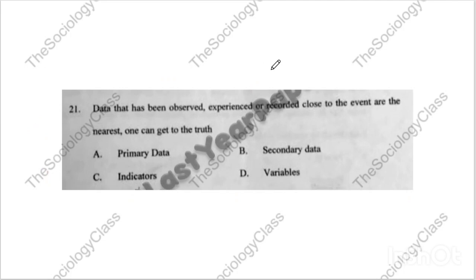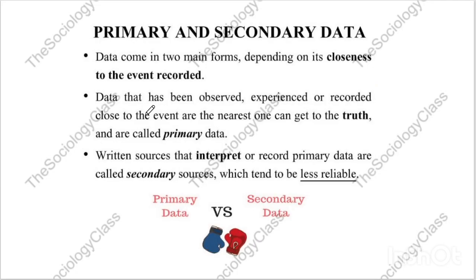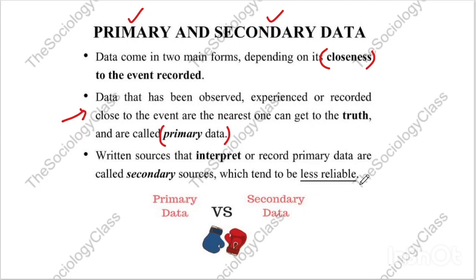Question number twenty-one: 'Data that has been observed, experienced, or recorded close to the event — close to the event is the key word here — are the nearest one can get to the truth.' Options: primary data, secondary data, indicator, variable. The correct answer is A — primary data. Primary data is closer; secondary data is further. Written sources that interpret or record primary data are called secondary sources, which tend to be less reliable.